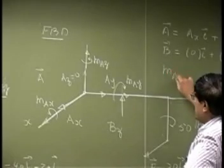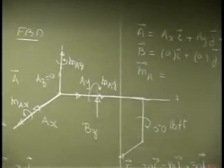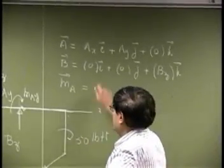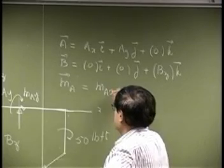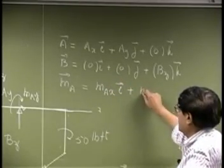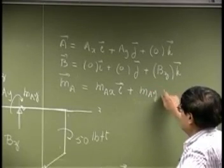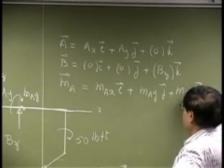There is an unknown couple at point A because there is no rotation allowed, and it's going to be MAX times i, MAY times j, and MAZ times k.